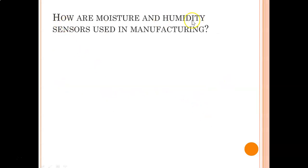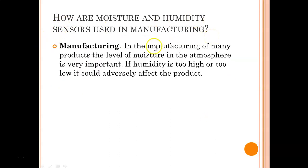How are moisture and humidity sensors used in manufacturing? In the manufacturing of many products, the level of moisture in the atmosphere is very important. If the humidity is too high or too low, it could adversely affect the product. So the control of the level of moisture in the atmosphere is very important in terms of manufacturing.